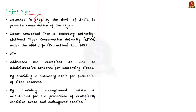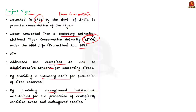Project Tiger was launched in 1973 by the Indian government to promote the conservation of tigers and has been the largest species conservation initiative of its kind in the world. It was later converted into a statutory authority as the National Tiger Conservation Authority by enabling provisions in the Wildlife Protection Act of 1972. The NTCA addresses ecological as well as administrative concerns for the conservation of tigers by providing a statutory basis for protection of tiger reserves and strengthened institutional mechanisms for protection of ecologically sensitive areas and endangered species.